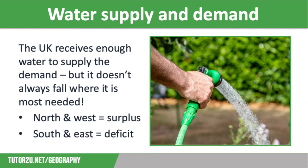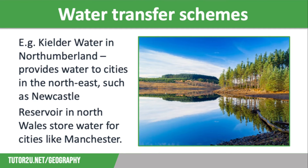So how do we get water from the areas of surplus to the areas of deficit? What about a national grid for water? The British government has considered setting up a national water grid, similar to the national grid for electricity, where the water would flow through pipes from areas of surplus, such as Wales, to areas of deficit, such as London. This idea has been discussed for many years, but it has not been put into practice, partly due to the enormous costs involved.